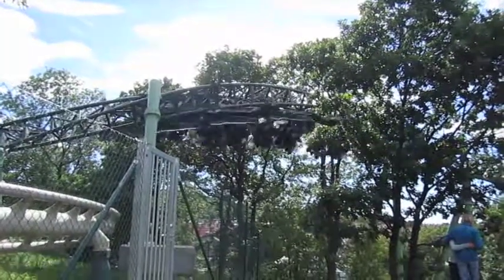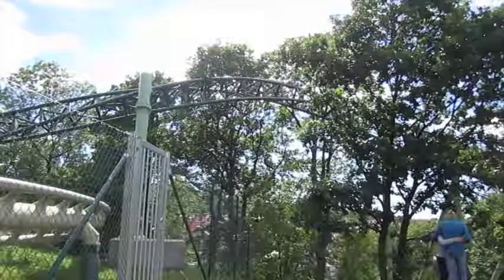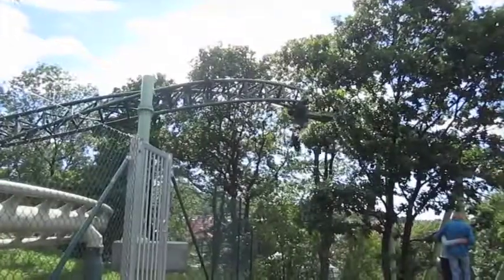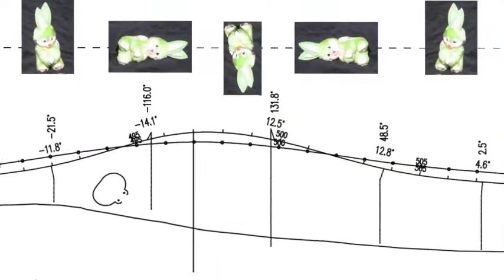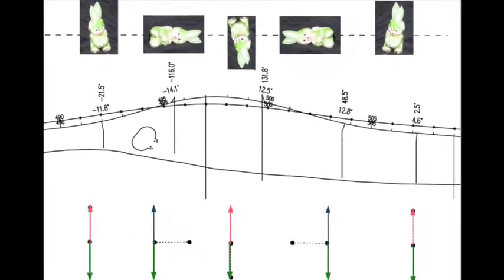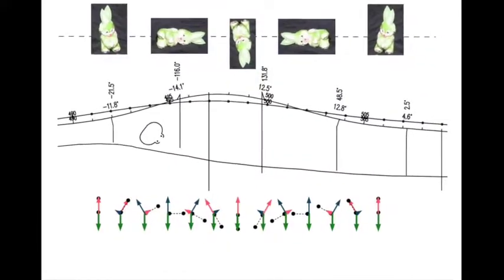However, the experience of the body depends of course on the orientation. Riding in the heart line roll makes it very clear that our bodies are not point particles. The direction of the force from the train relative to the body changes throughout the rotation.